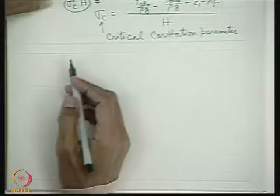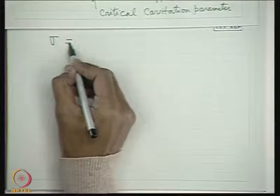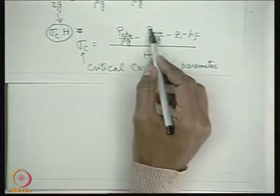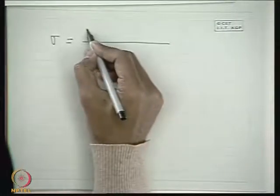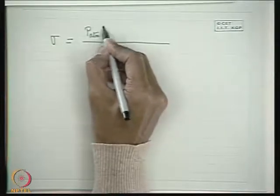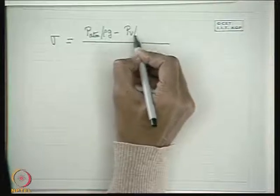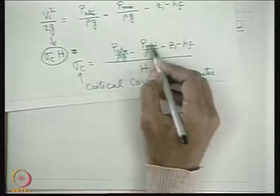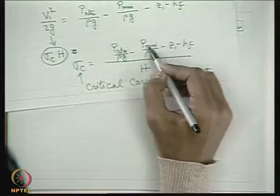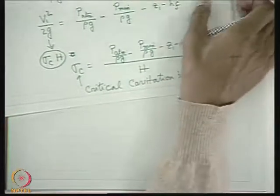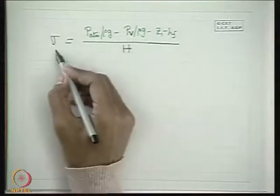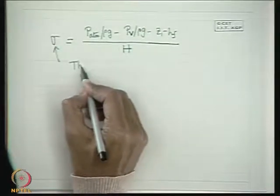Similarly, we can define the Thomas cavitation parameter σ, where the minimum pressure is set equal to the vapor pressure p_v of the liquid at the working temperature — which is the minimum allowable pressure in the entire hydraulic circuit of the pump. Substituting p_min = p_v gives the Thomas cavitation parameter, analogous to what was done for turbines.